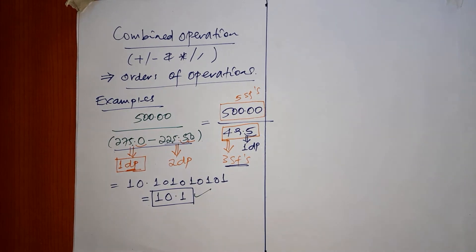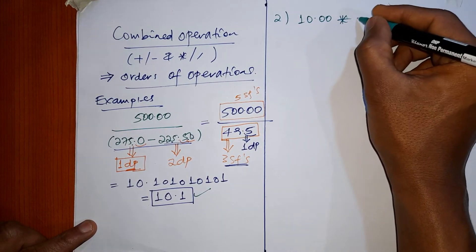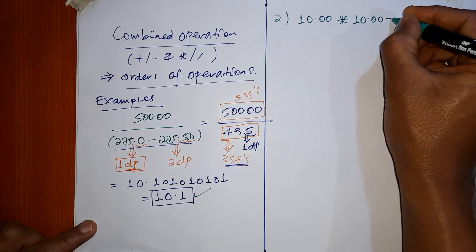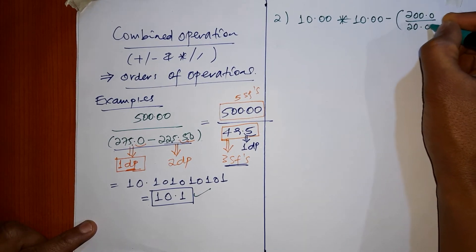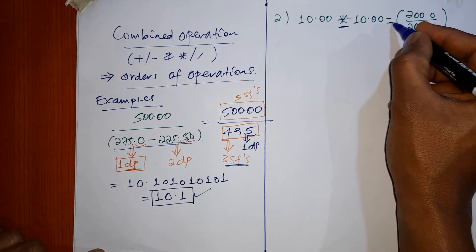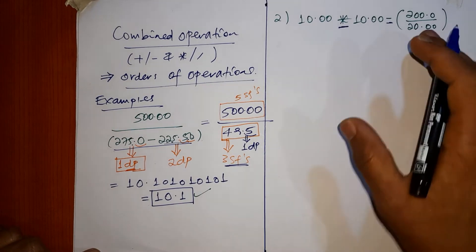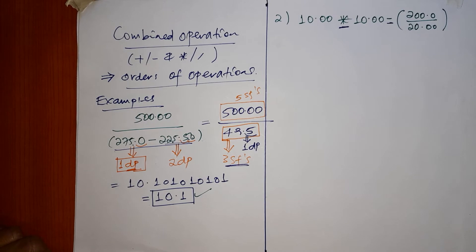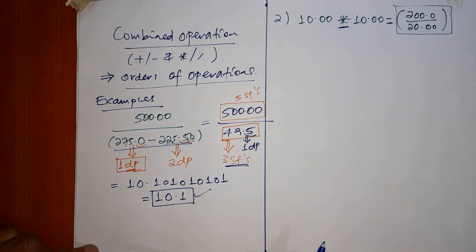Now let's consider the result again for significant figures. The next example is: 10.00 times 10.00 minus, in a bracket, 200.0 divided by 20.00. This is a more complex combined operation involving multiplication, subtraction, and a bracket with division. We solve this by considering significant figures, starting with the bracket term which has higher precedence.